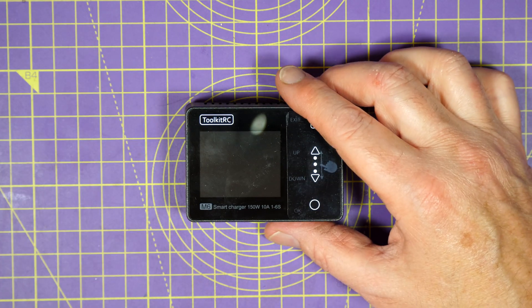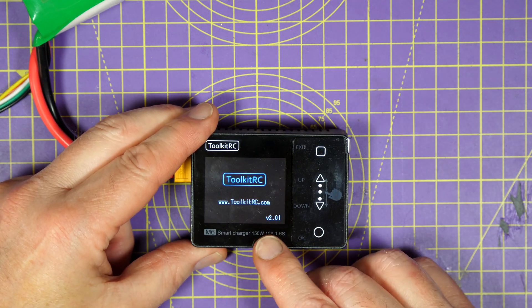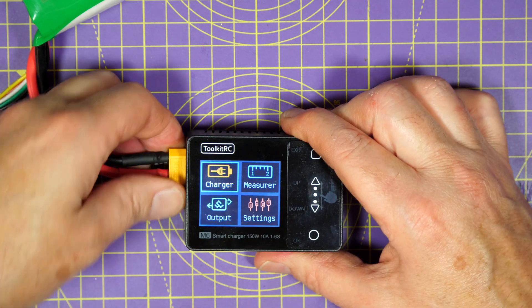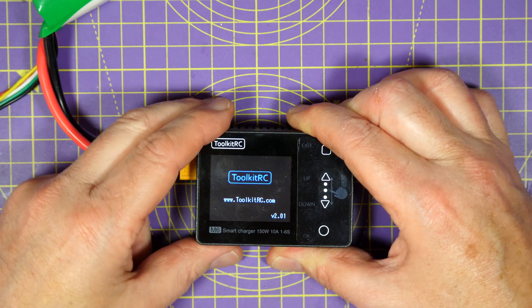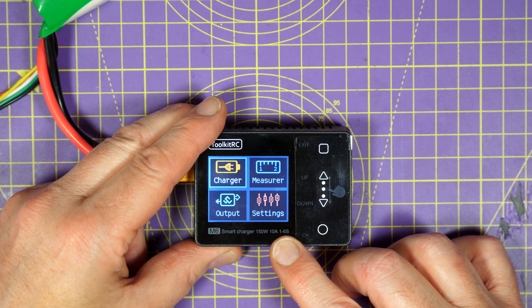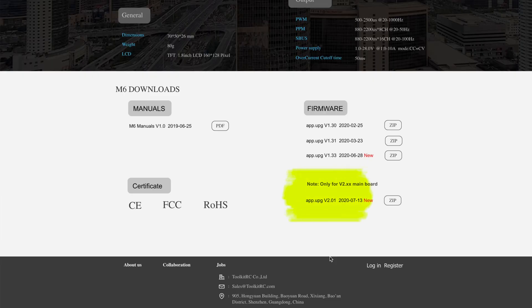How can you tell? Well, when you power it up, it'll show the firmware is version 2.01 very quickly. And if you look in the Toolkit RC website, you'll see that V2.01 is only for the V2 main board. And that's the one with the updated balance port.